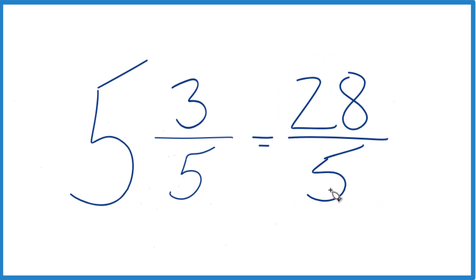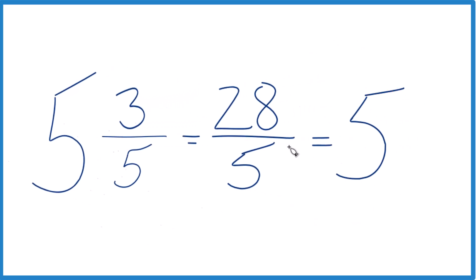You can even check your work here because 5 goes into 28. 5 times 5, that would be 25. And we'd have 3 left over. Bring the 5 across. And that's the mixed number we started out with, 5 and 3 fifths. So we know we did it correctly.